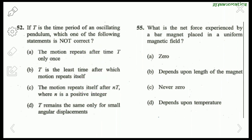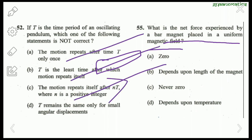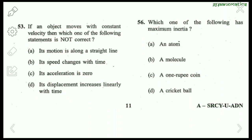Question 55: What is the net force experienced by a bar magnet placed in a uniform magnetic field? If we place a bar magnet in a uniform magnetic field, the net force will be zero.